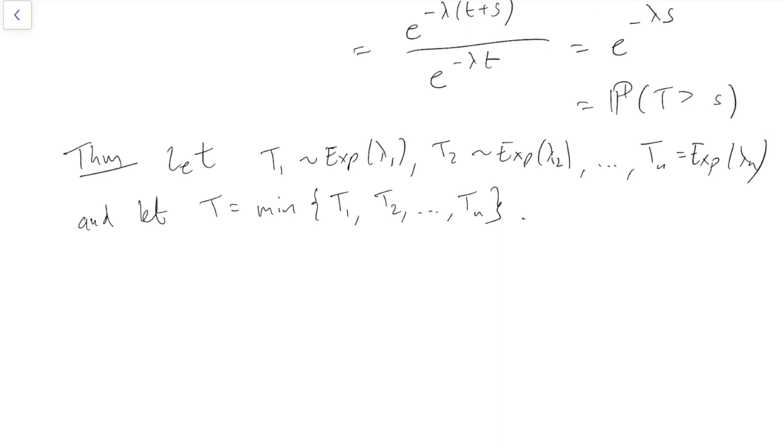It turns out that T, the time until the first alarm clock rings, is also exponentially distributed, and its parameter is the sum of all the individual parameters λ1 + λ2 + ... + λn. It's a kind of interesting fact.